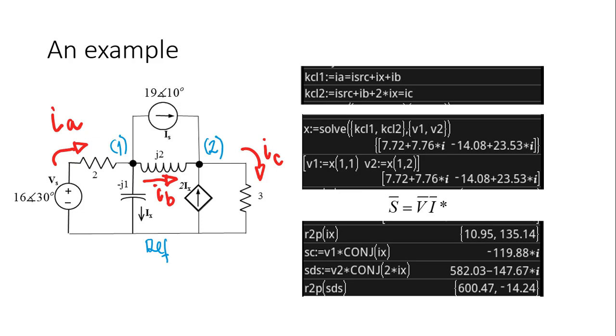And for the dependent source, sds, the complex power is voltage in the source, which is v2, multiplied by the complex conjugate of the current in the source, 2 times ix. That is the power delivered by the dependent source: 582 watts and negative 148 vars. Why do I say that is delivered power? Because that current in that dependent source is flowing from low volts, the reference, to high volts, node number two.